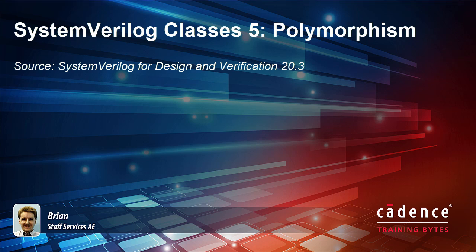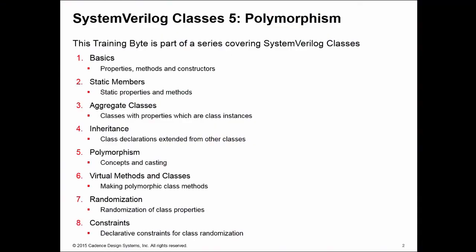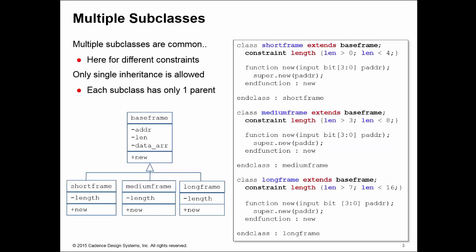This training byte is on class polymorphism in SystemVerilog. It is the fifth in a series of training bytes showing how to use classes in SystemVerilog. In this byte we cover polymorphism concepts and typecasting. It is common for a parent class to have multiple subclasses — here, base frame has subclasses short frame, medium frame, and long frame — and all these subclasses add additional constraints for randomization. In SystemVerilog we are only allowed single inheritance.